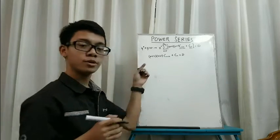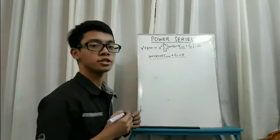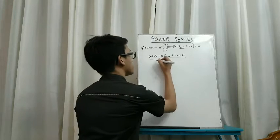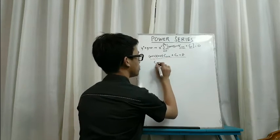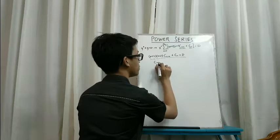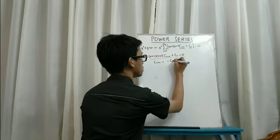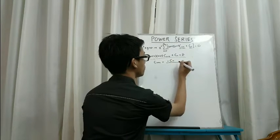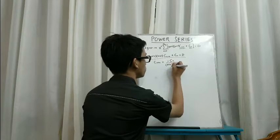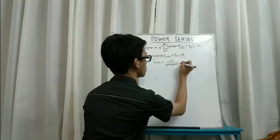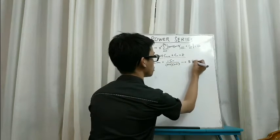By manipulating this equation we can get the recursion relation. We have c sub n plus 2 is equal to negative c sub n all over n plus 2 times n plus 1. This is our recursion relation.